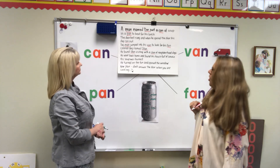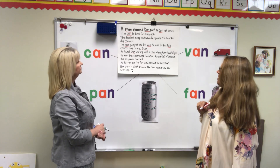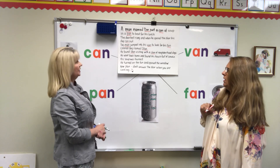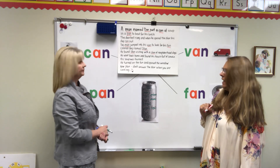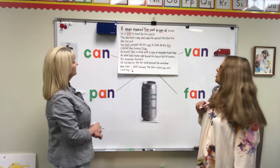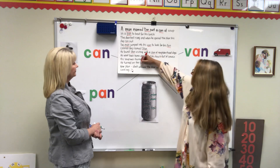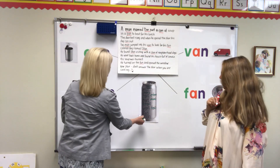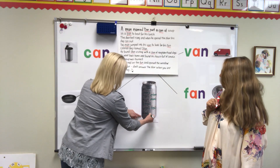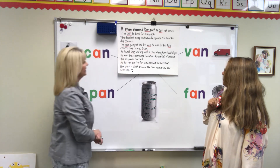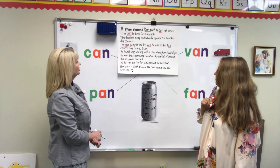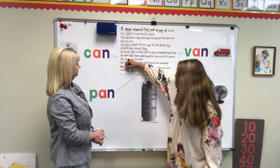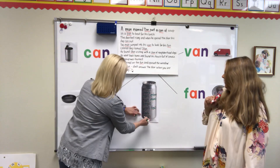He went back home and found his house full of smoke. His soup was burned. He turned on the fan and opened the window — here's fan, we're going to cross out fan. New plan — cross out plan.